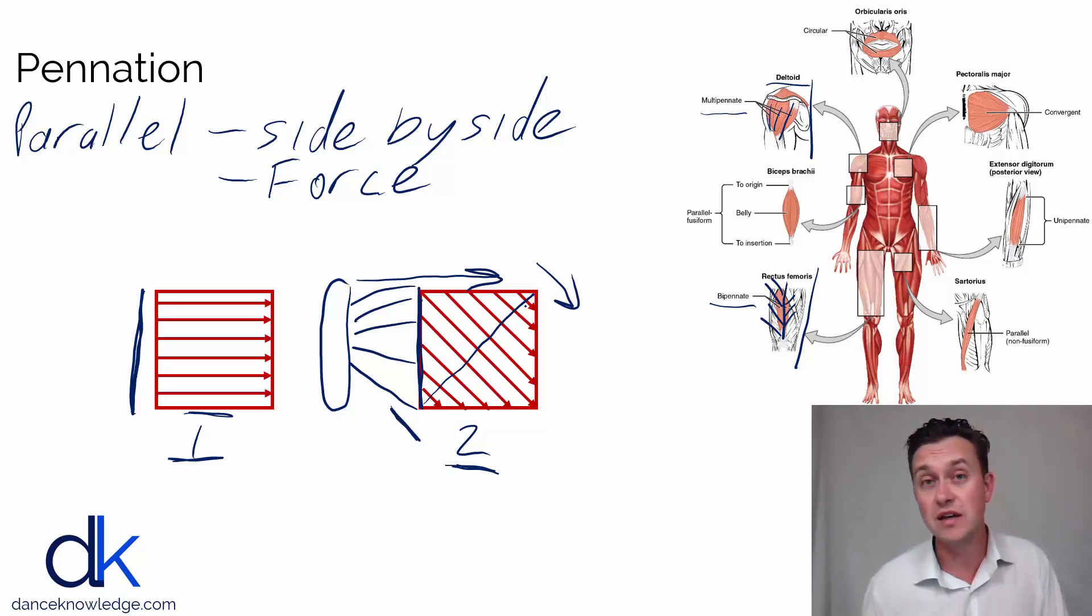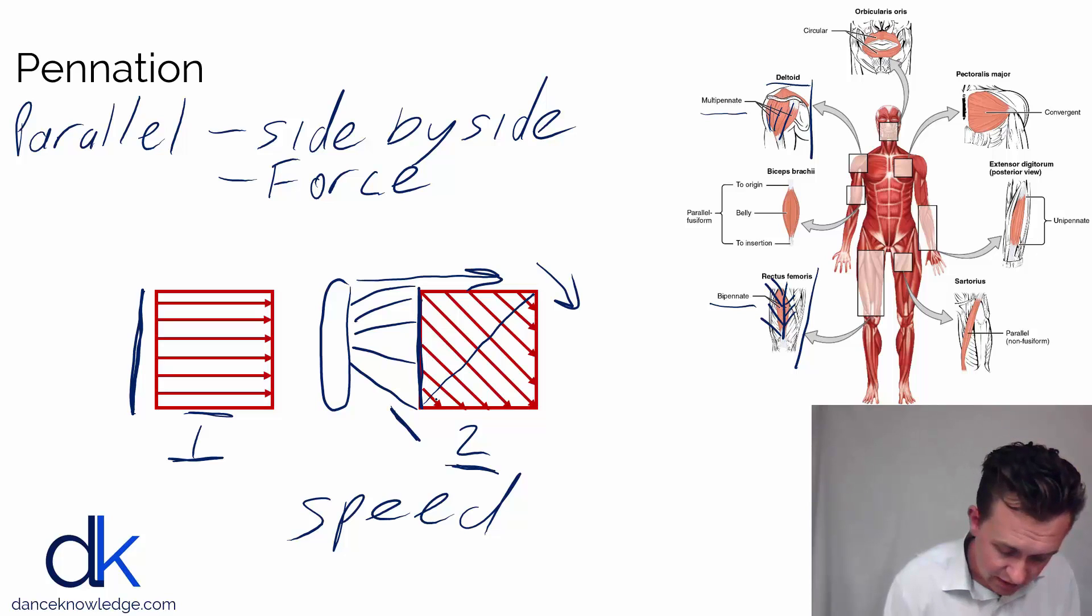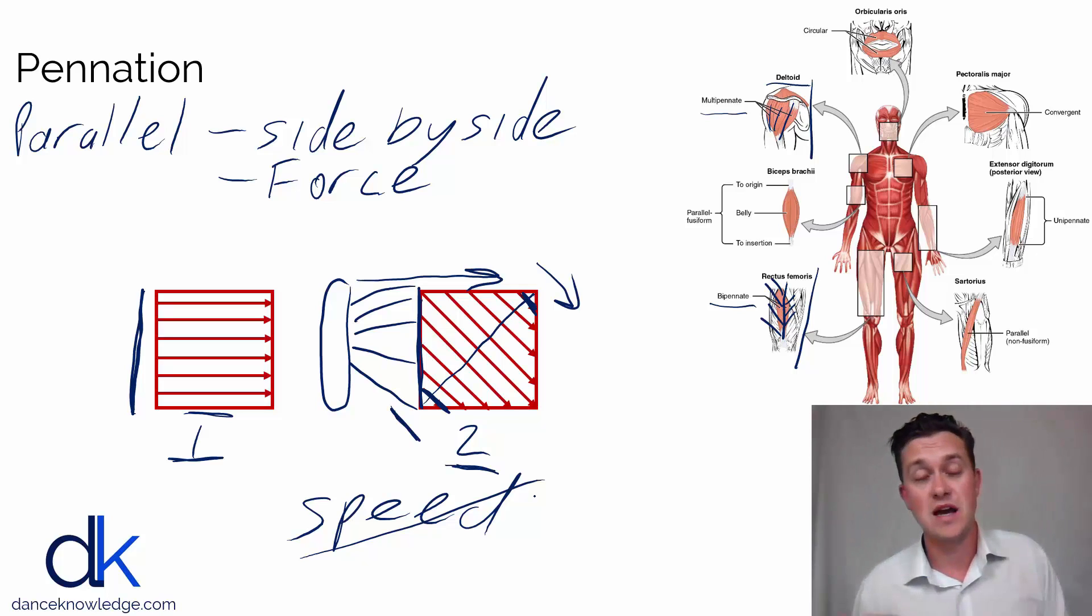But remember, one thing that more fibers in parallel does is it does nothing for speed. And hopefully you can appreciate here that particularly these fibers here at the end of the cross section are quite short. And so this pennation effectively can take out some of the speed of contraction, the contraction range of the muscle.